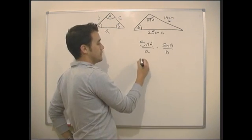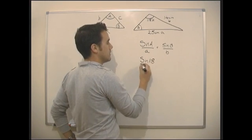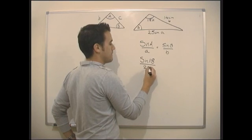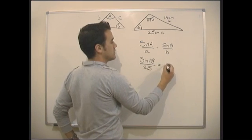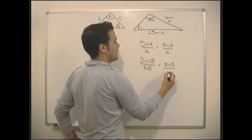So let's put the numbers in. It's that simple. Sine 118 over 25 equals sine B over 14.